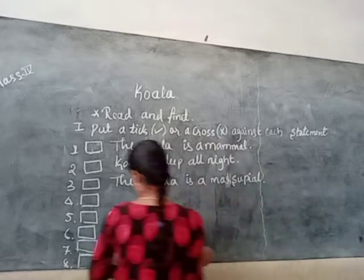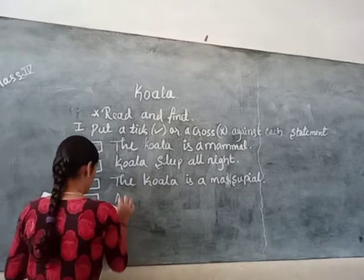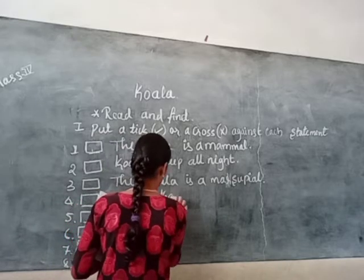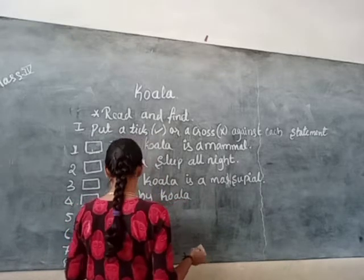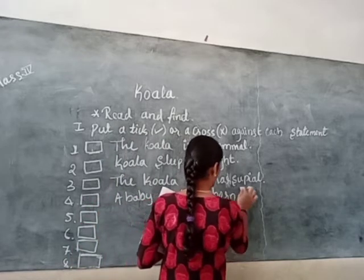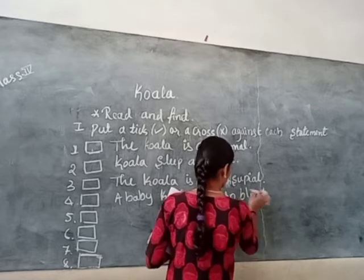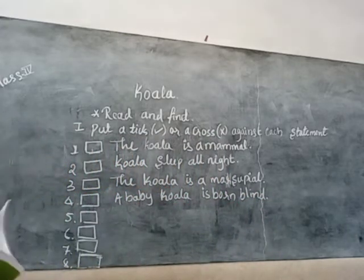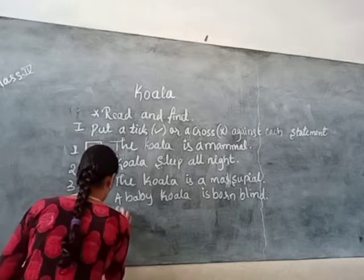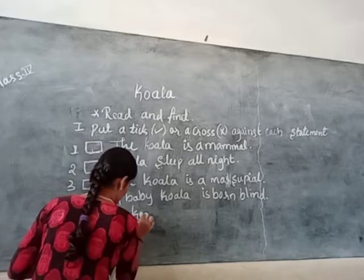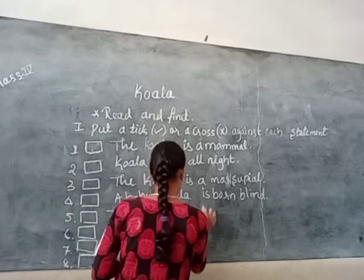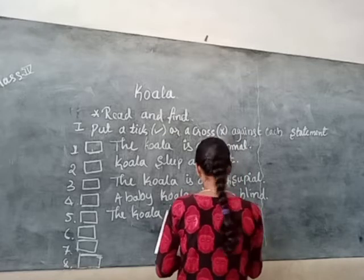Now let us see what is the first statement. A baby Koila is born blind. The Koila has a black nose.